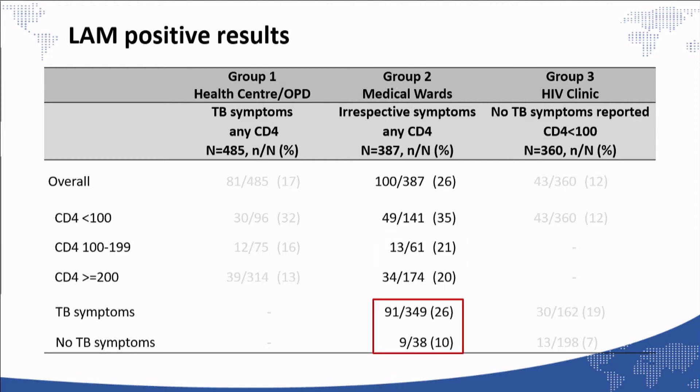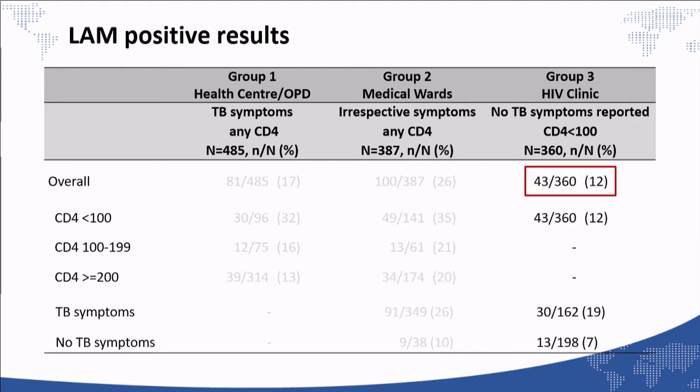LAM positivity was higher among patients with TB symptoms, though almost all patients in this population had at least one symptom. In group three — patients who did not self-report symptoms but were very immunocompromised — 12% had a positive LAM. Even among those not presenting TB symptoms, a small proportion still had a positive LAM.